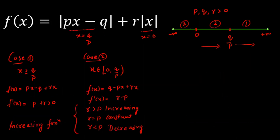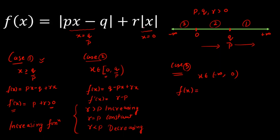Now for case three: x belongs to minus infinity to zero. Here both moduli are negative, so f of x equals (q minus px) minus rx. Differentiating, f'(x) equals minus p minus r. Since p and r are both positive real numbers, minus p minus r is less than zero. So in case three, the function is always decreasing.